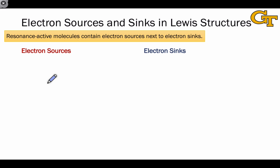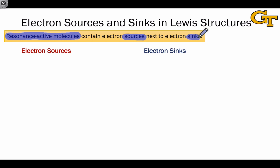The reason we care about electron sources and sinks is that resonance-active molecules — molecules to which resonance is relevant — contain electron sources adjacent to electron sinks, so we need to be able to recognize these elements in Lewis structures.